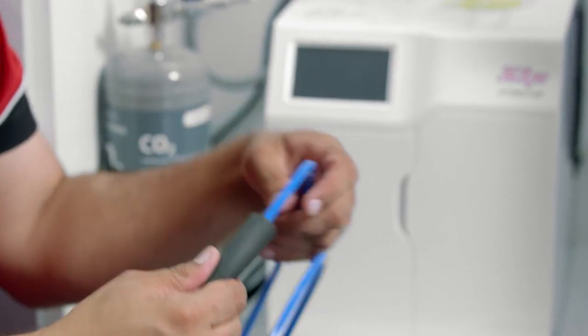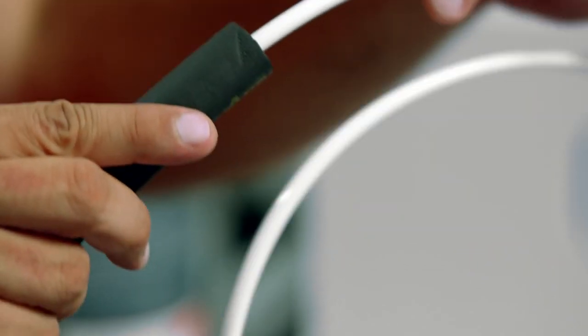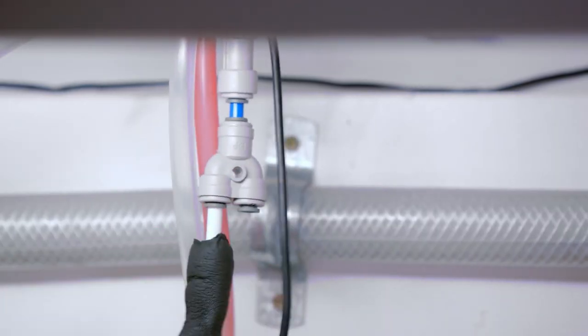Then, grabbing either the blue or white hose, feed it through one end of the insulation. Once you've fitted the insulation to the hoses, you need to connect the hoses to the tap.